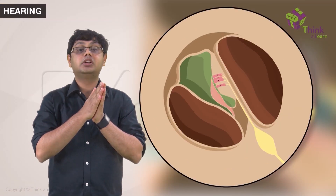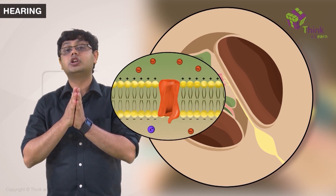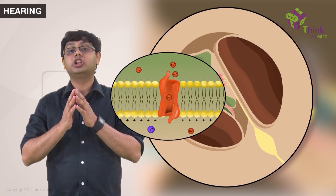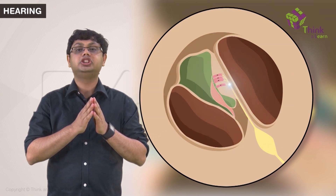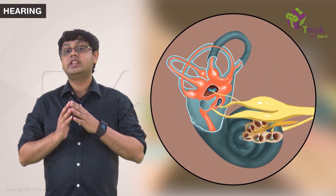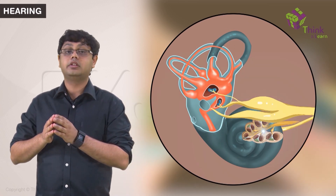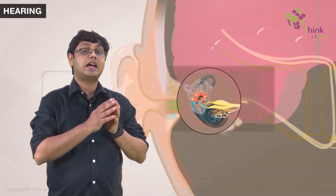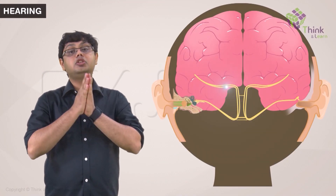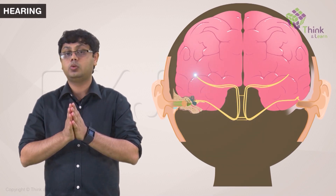This bends the stereocilia and causes opening of certain ion channels. There is once again a change in potential difference and a generation of action potential. This potential then travels through the branches of the vestibulocochlear nerve that innervates that hair cell. This nerve passes into the auditory cortex where the signals are decoded into sound.